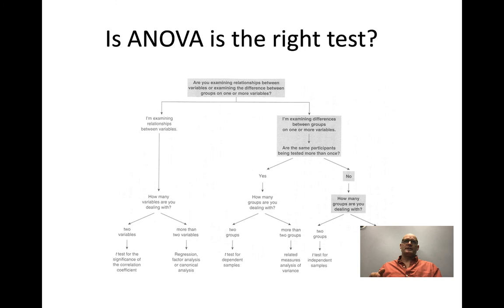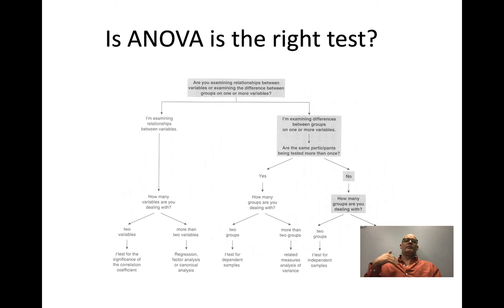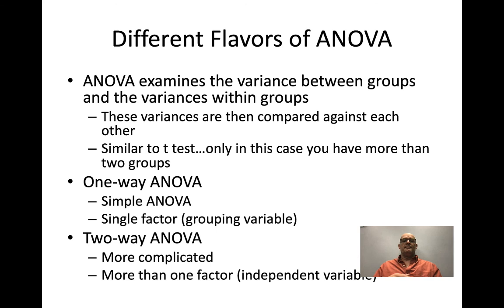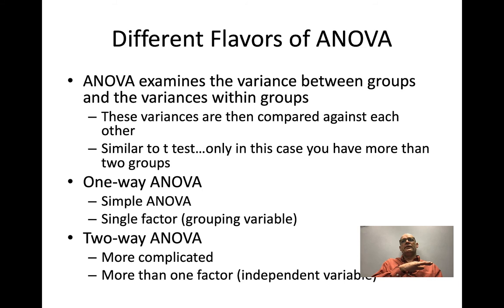ANOVA is not the right test for every situation. If you're comparing two groups, t-tests are always better. If you're comparing three or more groups, ANOVA is better. A one-way ANOVA uses a single grouping variable — for example, comparing political affiliation between individuals based on race. A two-way ANOVA compares an outcome using two different factors.